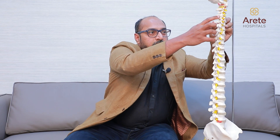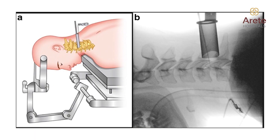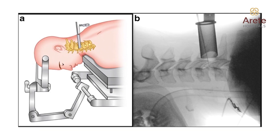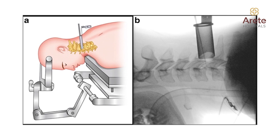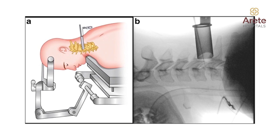For laminoforaminotomy, we approach from the posterior with a small incision, gain access to the disc which is between the nerve roots, and remove the disc compressing the nerve root. The advantage of laminoforaminotomy is that we spare the mobility of that level — we preserve the mobile segment, so the movement of the neck is not compromised by fusion, especially if it involves more than one or two levels.